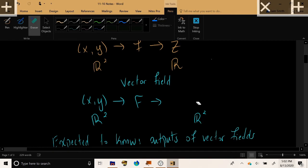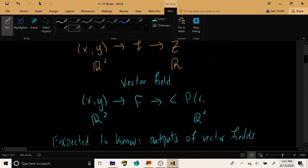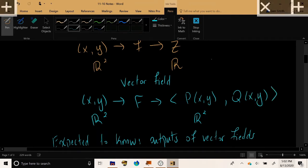Excuse me. I mean to have different notation for the components. The traditional notation is to have a function p here of x and y, and a function q here of x and y. This is the traditional notation for the first and second functions forming the components of the vector field F.